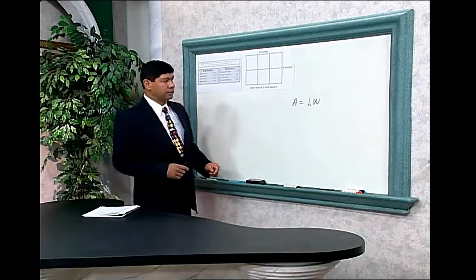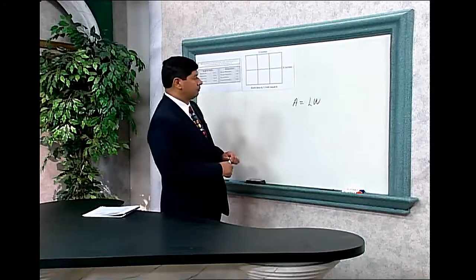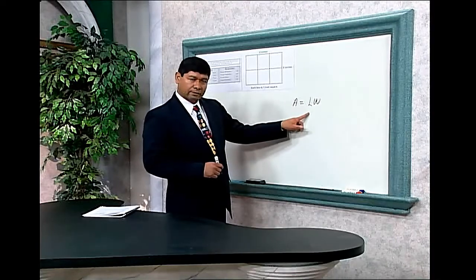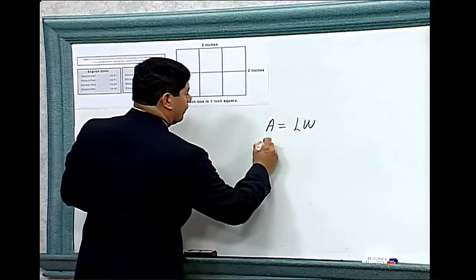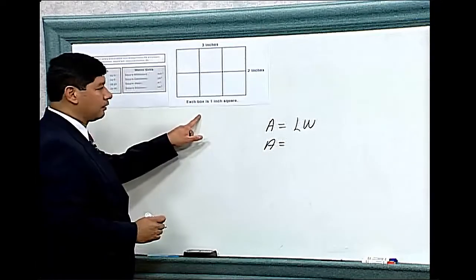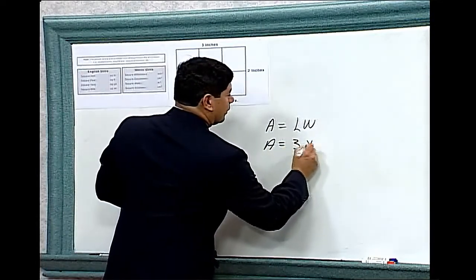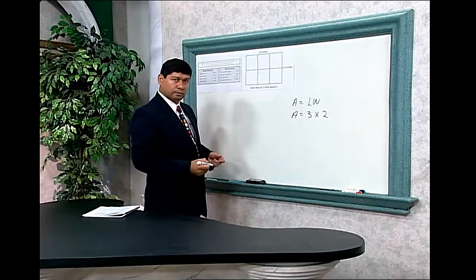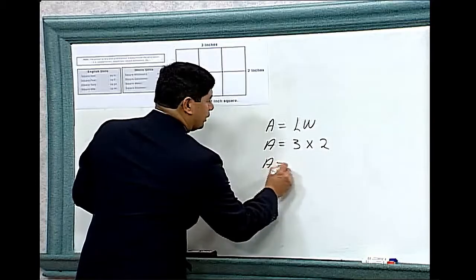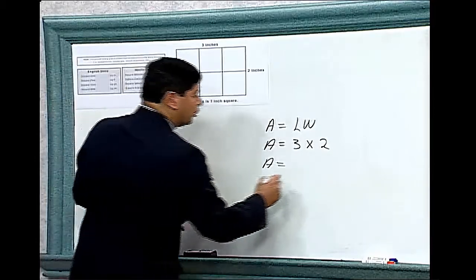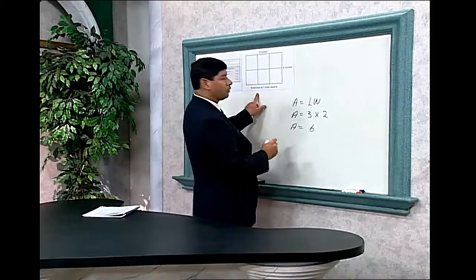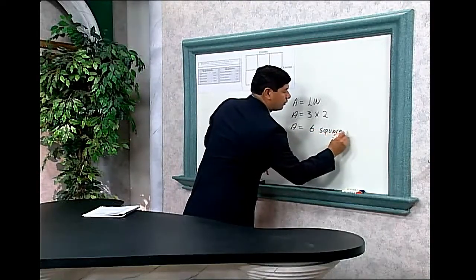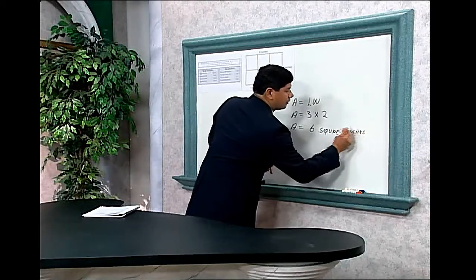Solution 2 would be to use our formula. To find the area of a rectangle, we multiply the length times the width. So the area of this rectangle is 3 inches by 2 inches. The area would be 3 times 2, which is 6. So the area of this rectangle is 6 square inches.